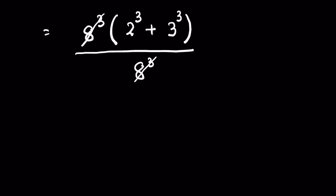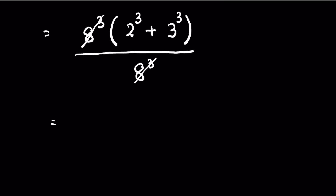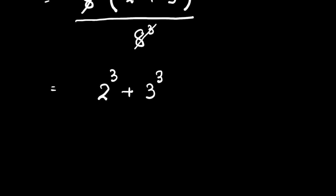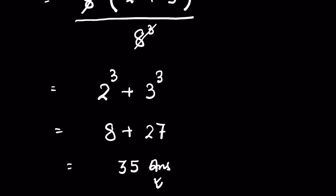We are left with 2 raised to the power 3 plus 3 raised to the power 3, which is 8 plus 27, and 27 plus 8 is equal to 35. Like and subscribe, thanks for watching.